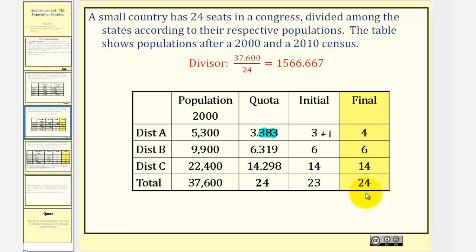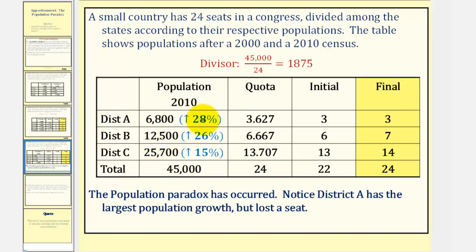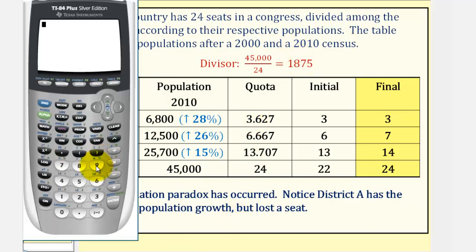Now we'll follow the same procedure with the population from 2010. Here's the population from 2010, and we're also including the percent growth from the year 2000. Notice the total population for the three states is 45,000, and the number of seats is staying the same. So our divisor is 45,000 divided by 24, or 1,875. To find the quota for district A, we divide 6,800 by 1,875, giving a quota of approximately 3.627.